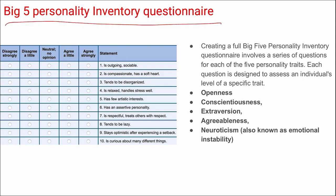Next is the Big 5 Personality Inventory questionnaire. It involves a series of questions assessing five personality traits: Openness, Conscientiousness, Extraversion, Agreeableness, and Neuroticism, also known as emotional instability. The questionnaire has 10 questions and based on the responses, the personality will be classified across these five dimensions.